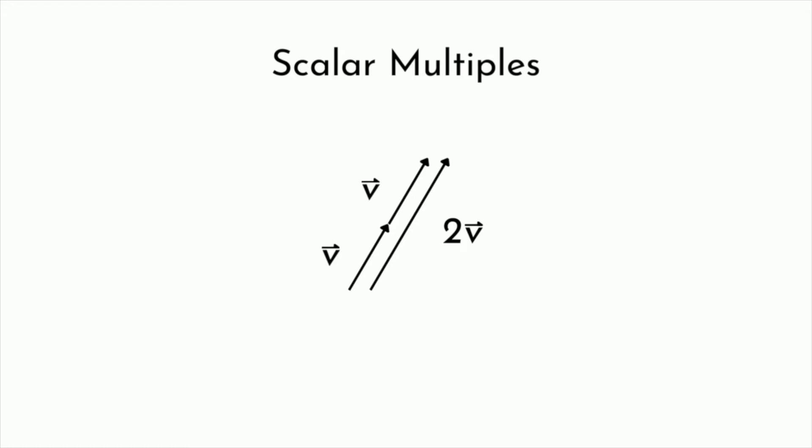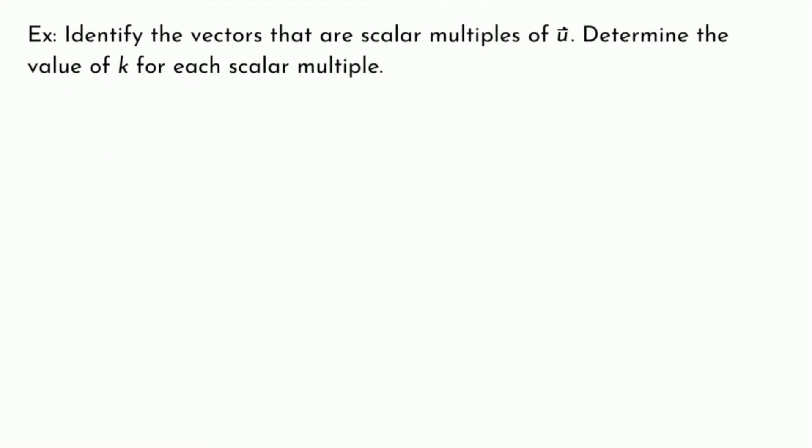Let's take a look at an example that's going to give you some practice looking at scalar multiples. So this example says, identify the vectors that are scalar multiples of vector u. Determine the value for k for each scalar multiple. All right, so here is our vector u, and we're going to bring in a pile of other vectors. We've got vector a, b, c, and d. And our goal is to figure out which of these vectors are scalar multiples of the original vector, vector u.